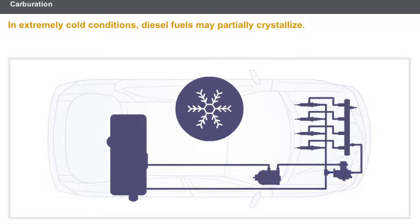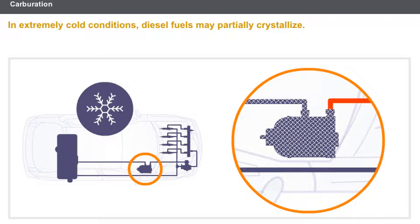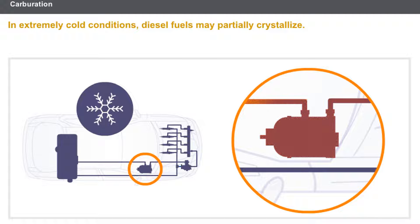In extremely cold conditions, diesel fuels may partially crystallize. Crystallization risks causing the filter to clog, therefore causing a cut in the fuel supply. The use of fuel additives lowers the temperature level at which the fuels crystallize. Diesel heater systems may be fitted to the filter unit.